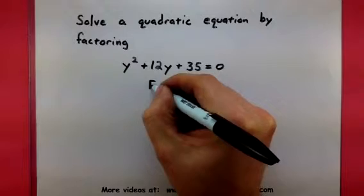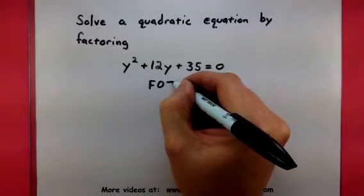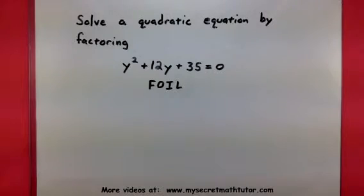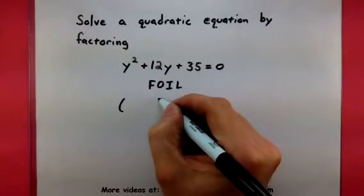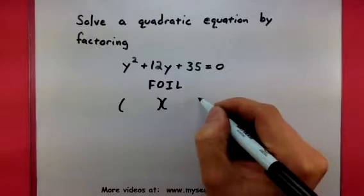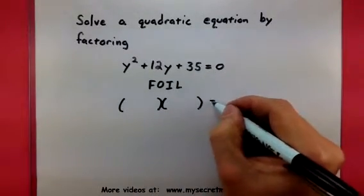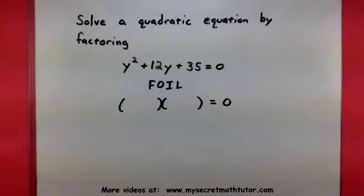And the way this method works is I think about how FOIL puts together two binomials, and when working reverse, I think what two binomials should my quadratic equation split into?